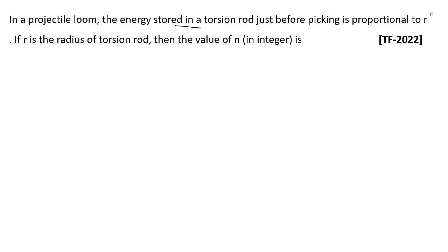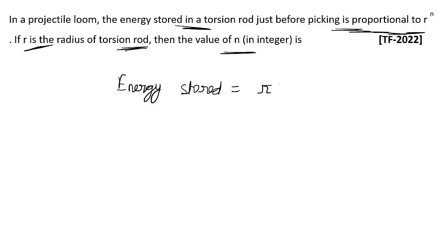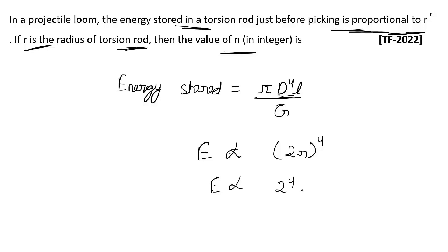In a projectile loom, the energy stored in a torsion rod just before picking is proportional to r to the power n. If r is the radius of the torsion rod, find n. The formula for energy stored is E = π·d⁴·l / g. Since diameter d = 2r, substituting gives E proportional to (2r)⁴, which equals 2⁴·r⁴. Comparing with E proportional to r^n, n equals 4.